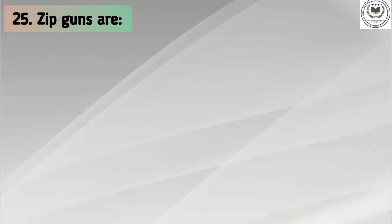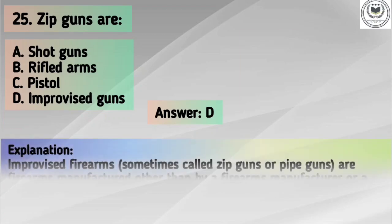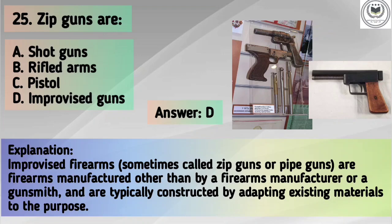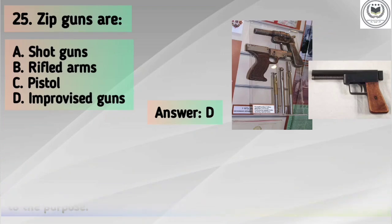Question number 25. Sip guns are — Options: A. Shotguns, B. Rifled arms, C. Pistol, D. Improvised guns. Answer is option D, Improvised guns. Explanation: Improvised firearms, sometimes called sip guns or pipe guns, are firearms manufactured other than by a firearms manufacturer or a gunsmith, and are typically constructed by adapting existing materials to the purpose.